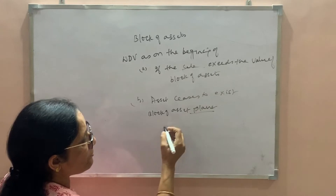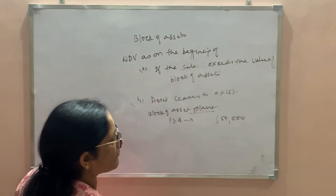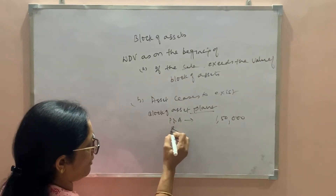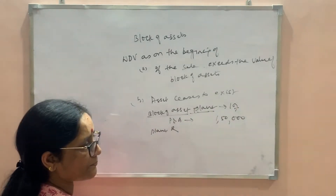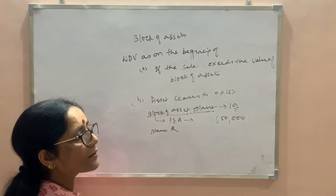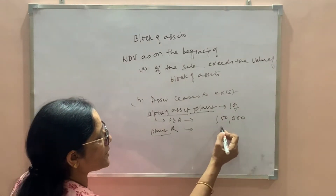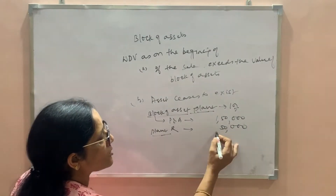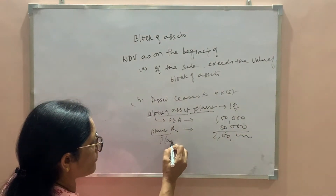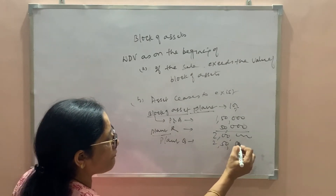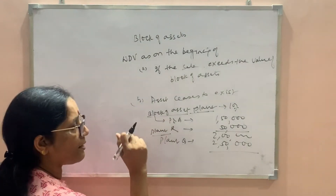For example, there are two plants P and Q in a block of assets — plant with 10% rate of depreciation — with WDV as on the beginning of the year of Rs. 1,50,000. During the year we purchased plant R for Rs. 50,000, making the value of the block Rs. 2,00,000. But during the year we sold plant Q for Rs. 2,50,000. Now assets P and R remain in the block.